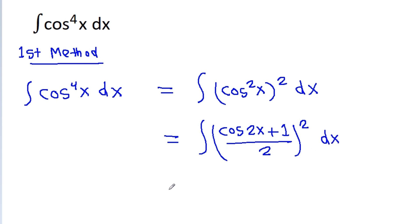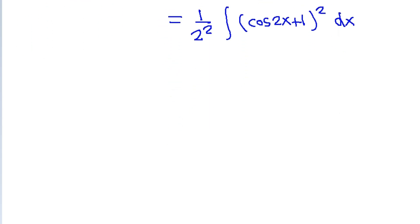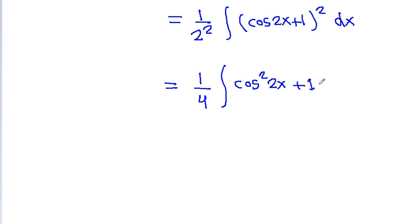These 1/2 terms are constant, so we can take 1/2 squared, which is 1/4, out of the integral. We get (1/4) times the integral of (cos2x + 1)² dx. Expanding, this equals (1/4) times the integral of cos²2x + 1 + 2cos2x dx.